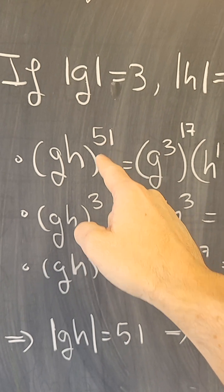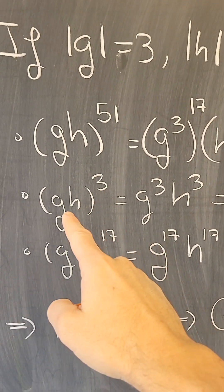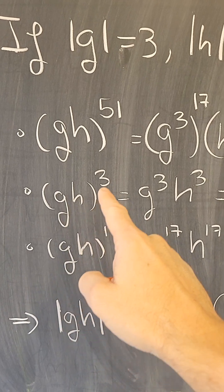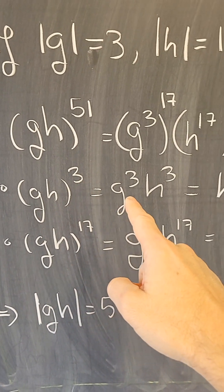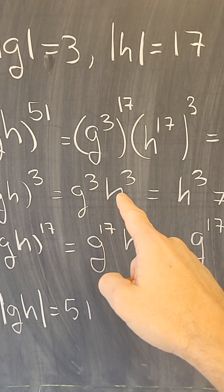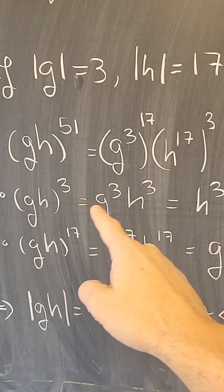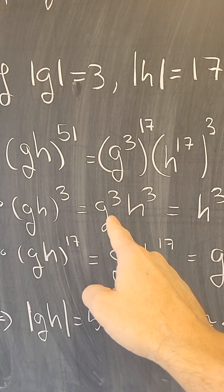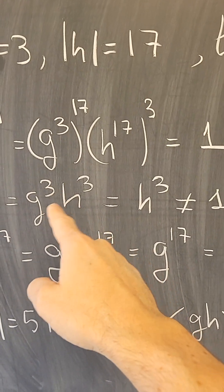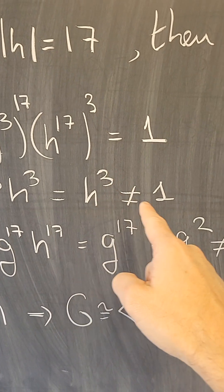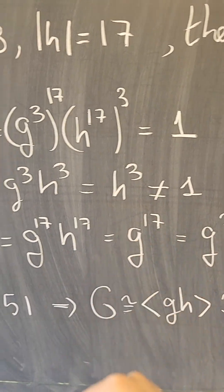Now is that the order? Well, if it's not the order, the order divides 51. So let's see if it's 3. g times h to the third power is g to the 3 times h to the 3. By the way, this is true because the group is abelian, and g to the 3 is 1, so this is h to the 3, which is not 1 because h has order 17.